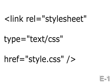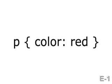With a linked file, you would type in your document head: open angle bracket, link, space, REL, equals, quotation mark, stylesheet, close quotation mark, space, type, equals, quotation mark, text/CSS, quotation mark, space, href, close angle bracket — to link to an external file named style.css. Then you would create a file called style.css and define the paragraph element text as being the color red by typing: p, open curly bracket, color, colon, space, red, close curly bracket, within the .css file.